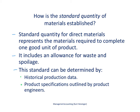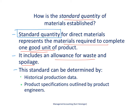The standard quantity for materials represents the materials required to complete one good unit of product. For example, we might require two pounds of materials to produce one gallon of ice cream. It should include an allowance for waste and spoilage, because we're not always perfect in production — sometimes materials have to be thrown out. So we should allow for some waste and spoilage when establishing that standard quantity of direct materials.